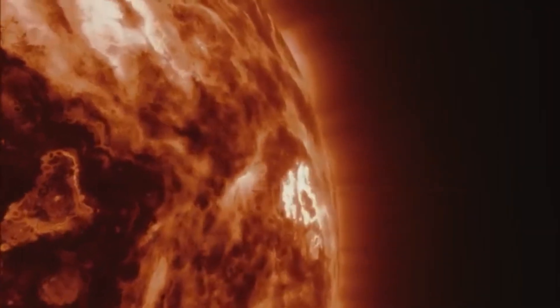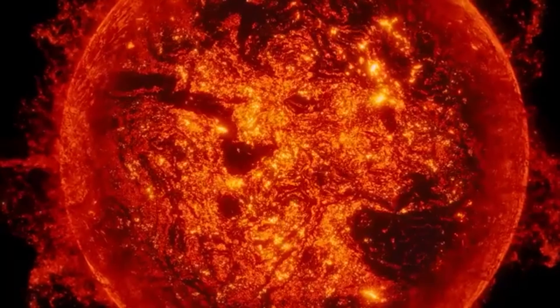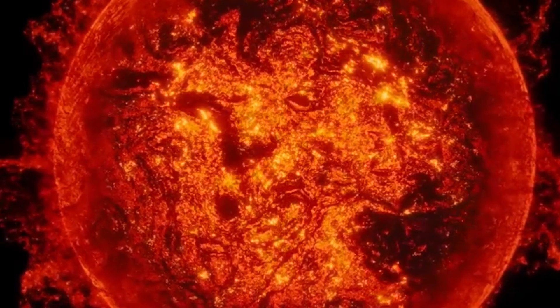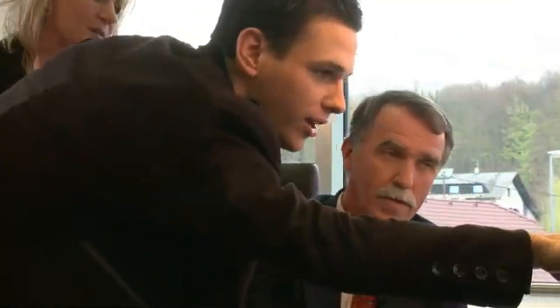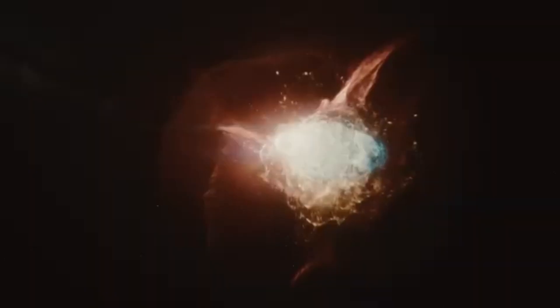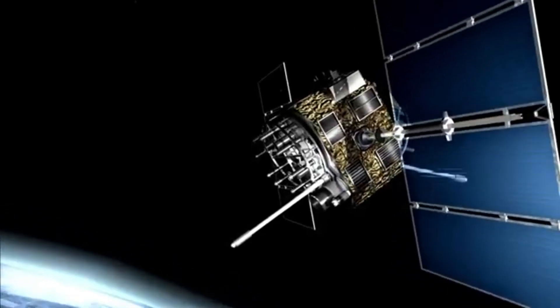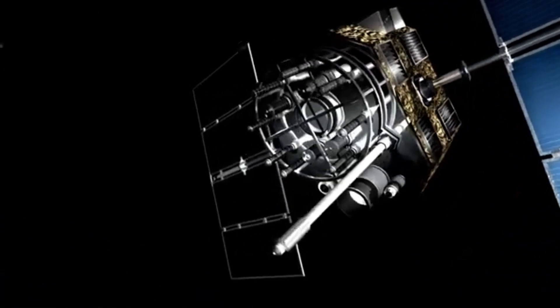If Betelgeuse were to go supernova in our lifetime, it would be nothing short of spectacular. At approximately 654 light-years from Earth, it is close enough that such an explosion would not only be visible to the naked eye, but would likely shine brighter than the full moon. For weeks or even months, Betelgeuse would dominate the night sky, casting shadows at night and potentially being visible even during the day. This celestial event would become one of the most significant astronomical occurrences in human history.